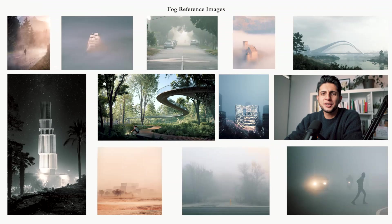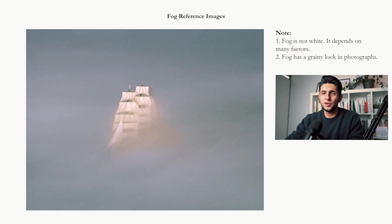Before we dive into the techniques, I want us to study fog in photographs and other renders to understand how fog actually works. I've saved some reference images — both photographs and renders — of how fog can be applied. The first thing I want you to see is that fog is not always white or gray; it has a lot of colors, it has gray and bluish tones. It really depends on the context, so no two fogs are the same.